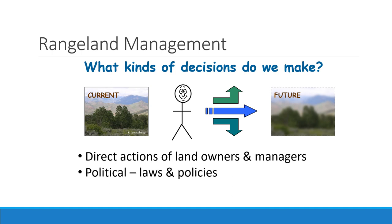We can also make political decisions that will change the outcomes and opportunities we have on the land. By weighing in on laws or policies, we can change what can be done on the land. When you vote for a person or for a specific policy or law, that could change the way the land operates — the kinds of things we can do on the land that will affect it.